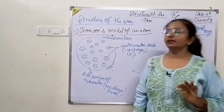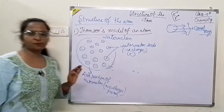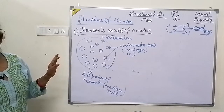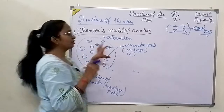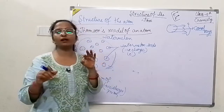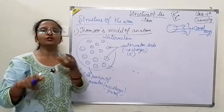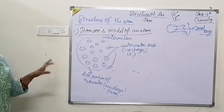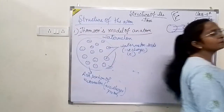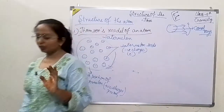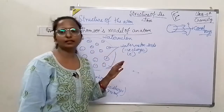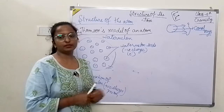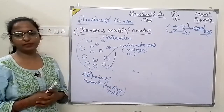This was Thomson's model — he compared it to Christmas pudding and watermelon. All atoms are like this. Thomson also told us that electrons are embedded in the positively charged sphere. The positive and negative charges are equal in magnitude, which is why atoms behave as neutral.